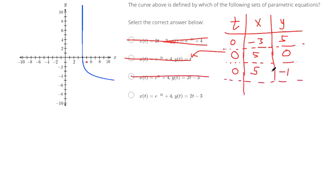Let's just confirm it by plugging in 0. If you plug in 0, you get 5 for x. If you plug in 0, that's e to the 0, which is 1, 1 plus 4 makes 5 for the x. If you plug in 0 here, 0 minus 3,